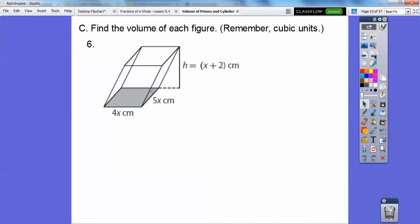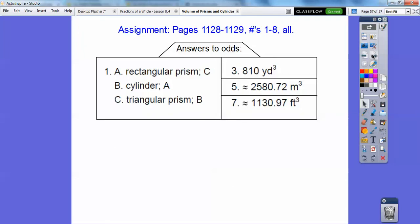So here is an oblique prism, so base times height. The base is 4x times 5x, the height is x + 2. 4x times 5x is 20x². Distribute, there's our answer. Alright, if you are in my class, that's going to be your assignment. Take care.